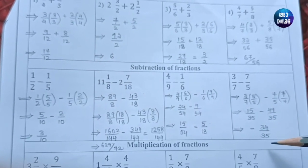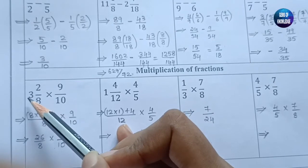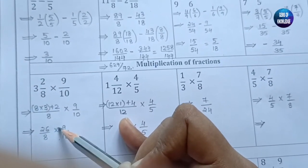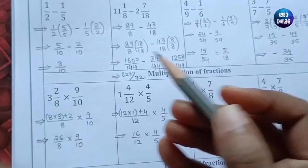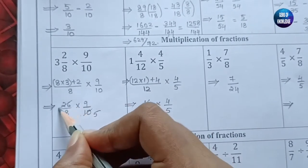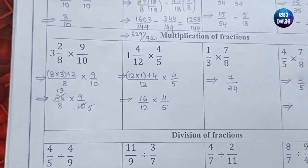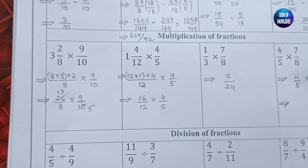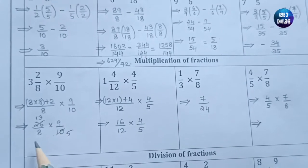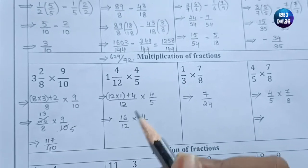Moving to multiplication of fractions: the first problem involves a mixed fraction. Convert it: 3 eights are 24, plus 2 is 26, giving 26/8. Multiply by 9/10. Cancel where possible — 2 fives are 10 and 2 thirteens — so after cancellation you multiply: 13 nines are 117 and 8 fives are 40, giving 117/40.